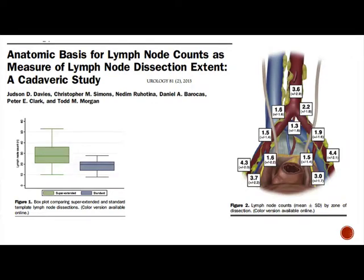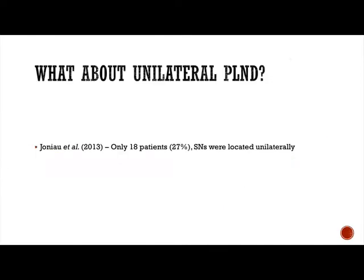A similar study of 858 patients with higher mean and median node counts found the more nodes you get, the more positive ones you find. They said you need to harvest at least 28 nodes to achieve a 90% ability to detect positive nodes. A cadaveric study also confirmed that an extended template yields more nodes than a standard template.